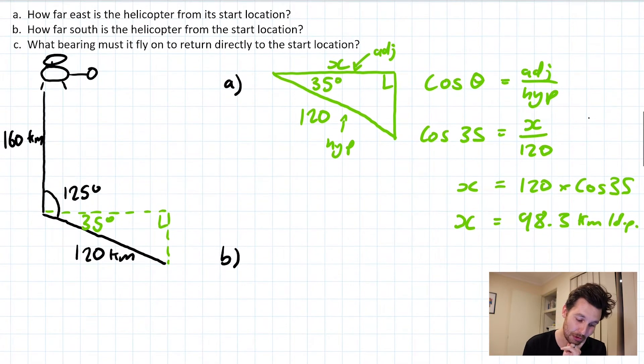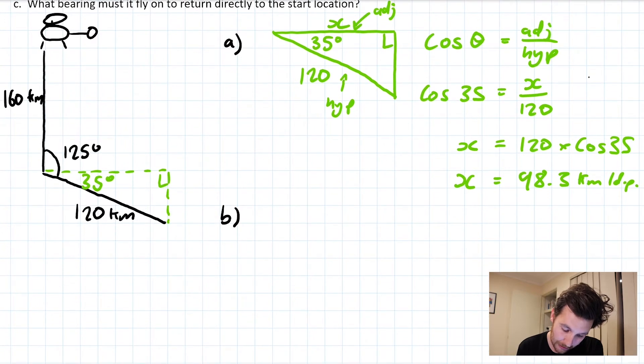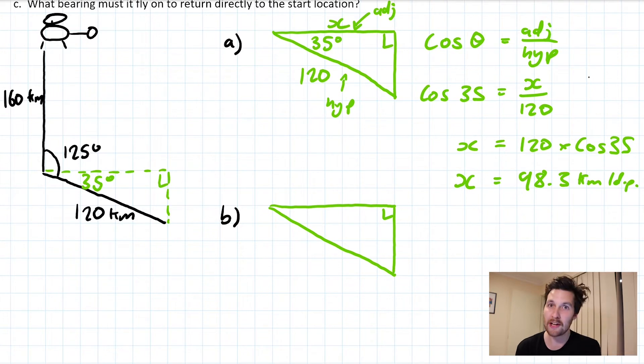Now for question B. Question B is asking how far south the helicopter is from the start location. So what we can actually do for this one is use the same right angle triangle. I'll redraw this here in green, just for consistency. Okay, so what's changed this time? We've got the same internal given angle, which is 35°. We've got the same hypotenuse length, which is 120.